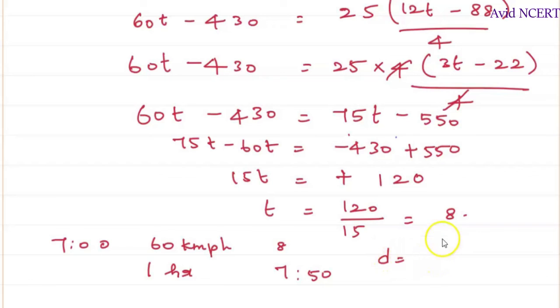So the distance he has traveled here is distance equals, we know the formula distance is speed into time. So speed here is 60 kilometer per hour into time is 7:50. He has traveled for 50 minutes, 50 and to convert into hour, this is divided by 60. So 60, 60 gets canceled, which is 50 kilometers. The distance he traveled is 50 kilometers.